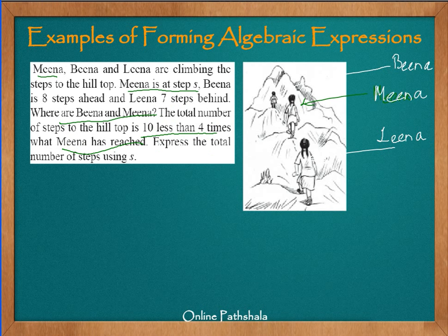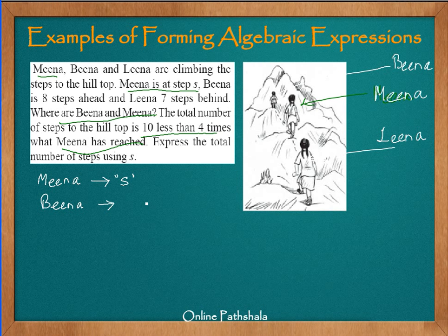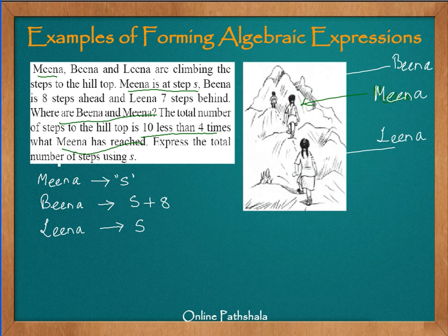First we write down where Bina has reached. We know the steps of Mina — Mina is at S. Now let's take up Bina. Bina is 8 steps ahead, so the number of steps where Bina is, is simply S plus 8 — 8 steps added to the number of steps reached by Mina. And for Lina, she is 7 steps behind, so Lina would be at S minus 7 steps.